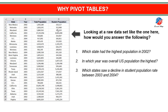The third question is: which states saw a decline in student population rate between 2003 and 2004? For that also, by taking years and that population rate, by taking everything, we'll do some calculations and get some result. But it is a difficult process. Without using pivot tables, we are able to answer these questions, but it's very difficult.